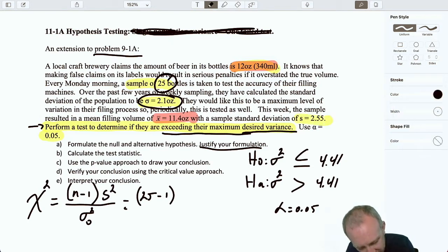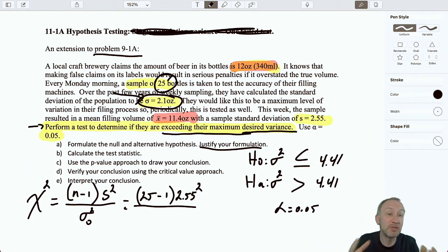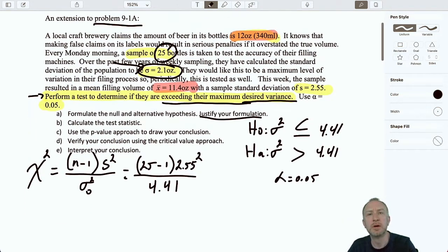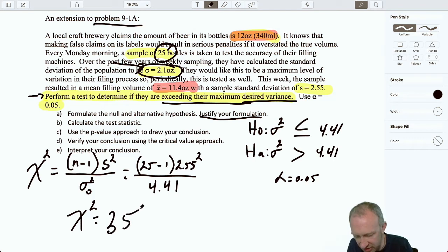Here I've got all of the values that we need. Our sample size is 25, 25 minus 1. Our sample variance is 2.55 squared, divided by our hypothesized value. Here I could put 2.1 squared, because that's what we were given. I've already squared it, so I'm going to put in that hypothesized value, 4.41. I can calculate our chi-squared value. This is 24 times 2.55 squared, divided by 4.41. That gives me a test statistic of 35.39.